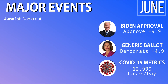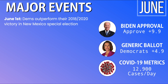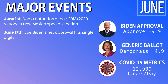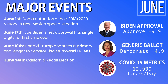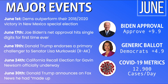In June, on June 1st, the Democratic Party outperformed their 2018 and 2020 victories in the New Mexico special election in the 1st Congressional District. On June 17th, Joe Biden's net approval hit single digits for the first time during his presidency. On June 19th, Donald Trump endorsed a primary challenger to Senator Lisa Murkowski of Alaska. On June 24th, the California recall election for Gavin Newsom officially got underway with full campaigning. On June 30th, Donald Trump announced to Sean Hannity that he has made up his mind on 2024 but will not reveal his decision. Biden's approval dips to plus 9.9%, the generic ballot sits at plus 4.9% for Democrats, and COVID hits a low of 12,900 cases per day.